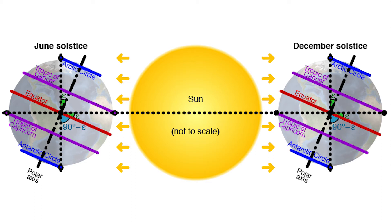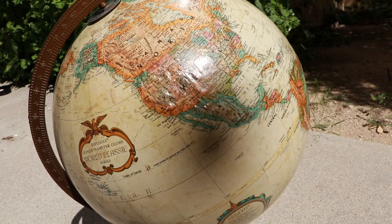In June, the orientation of the tilt of the Earth is such that the North Pole points towards the Sun, so the whole northern hemisphere is tilted toward the Sun. In our demonstration of the eclipse happening in August, the Earth is exactly two months past the maximum inclination that happens on the summer solstice, June 21st.